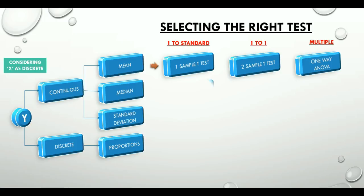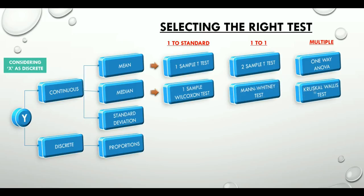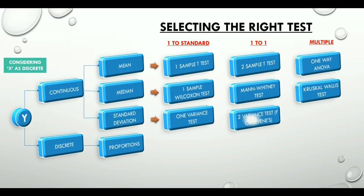For median, we have one sample Wilcoxson, Mann-Whitney test, and Kruskal-Wallis test. For standard deviation, there is one variance test, two variance test, and Bartlett or Levine's test. Using F-test for two variance test strictly requires both the distributions to be normal. Levine's is a more robust test, which uses the absolute values of the deviations from the mean.